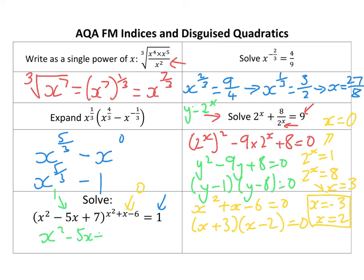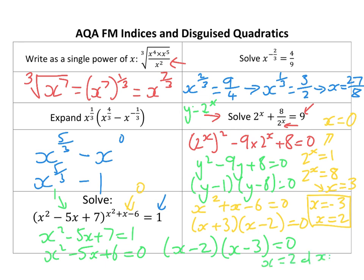I've also got x squared minus 5x plus 7 equals 1, because 1 to any power is 1. So solve that — rearranging gives x squared minus 5x plus 6 equals 0, which factorises to x minus 2 times x minus 3 equals 0. So more solutions: x equals 2 and x equals 3. I've already got 2, so actually the solutions are x equals plus or minus 3 and x equals 2.